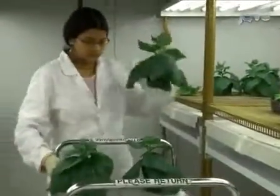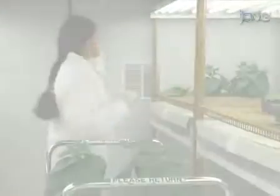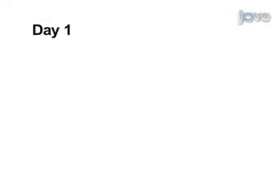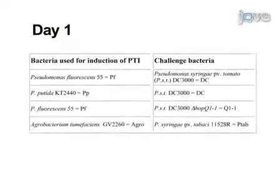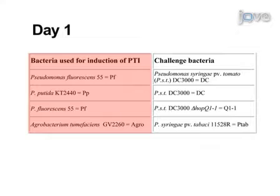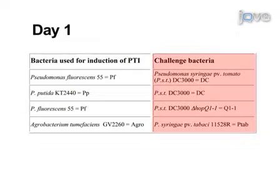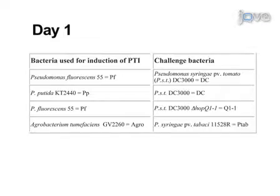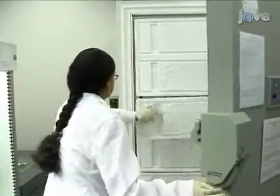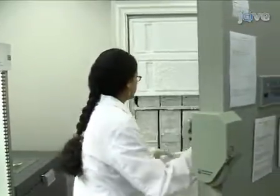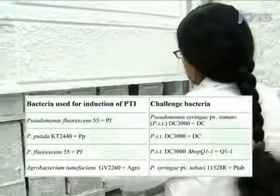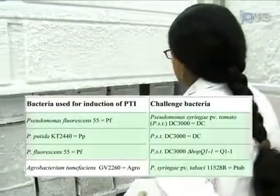After preparing the plants, proceed to grow the bacteria. This procedure uses non-pathogenic bacteria for induction of plant immunity prior to a second inoculation with challenge bacteria. Initiate growth of all the bacteria used in the assay at the same time. Use frozen glycerol stocks of the Pseudomonas bacteria.